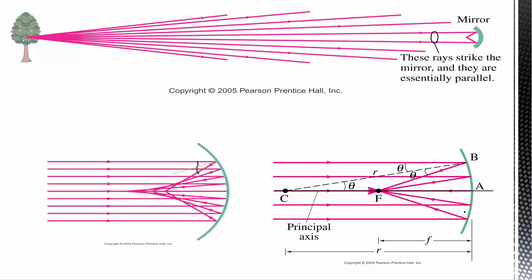Now, what happens with a highly curved mirror is these rays will tend to converge, but not at exactly the same point — some converge out here and some way in here. So we're not able to get a nice image; we get what are called spherical aberrations. But if we have a mirror that's not as curved, they are a lot more closely focused at a single point. For all practical purposes, we are going to treat our spherical mirrors as if they are flat enough that they focus all the rays essentially to the same point.